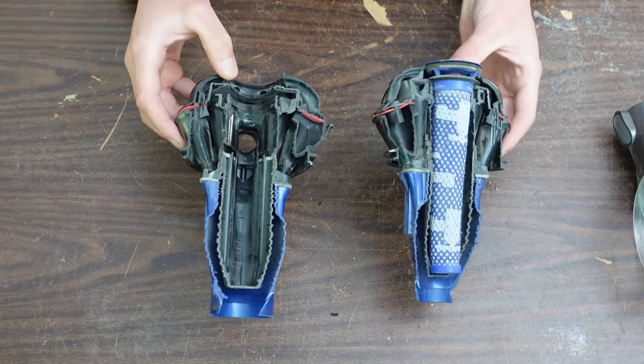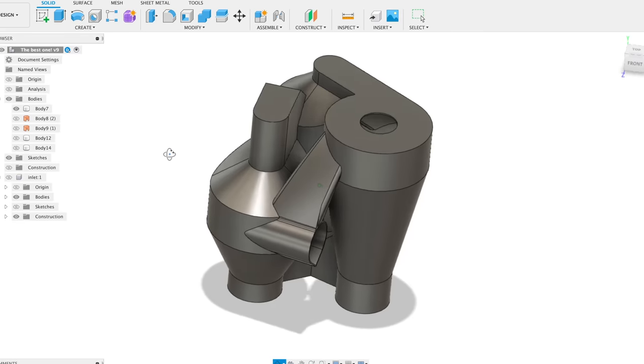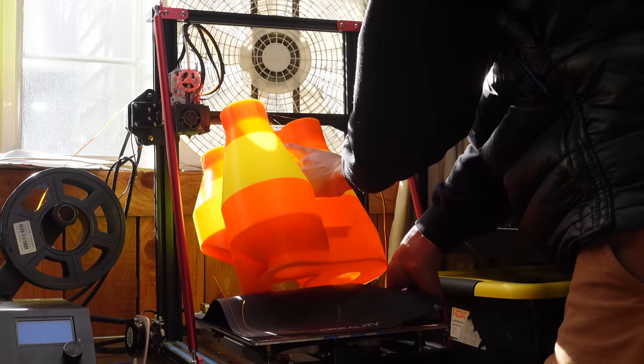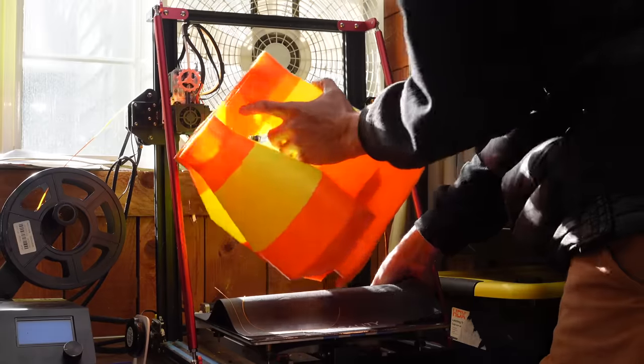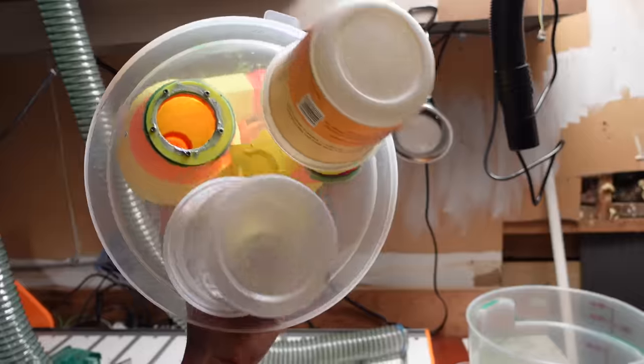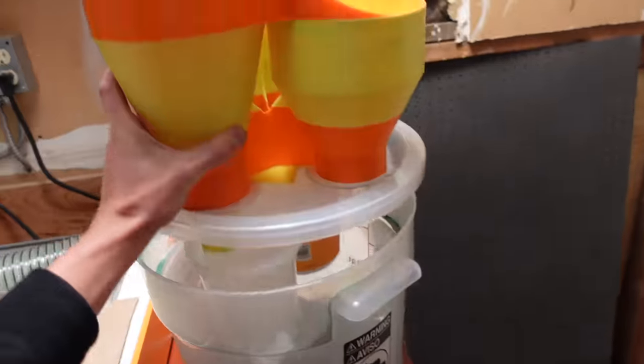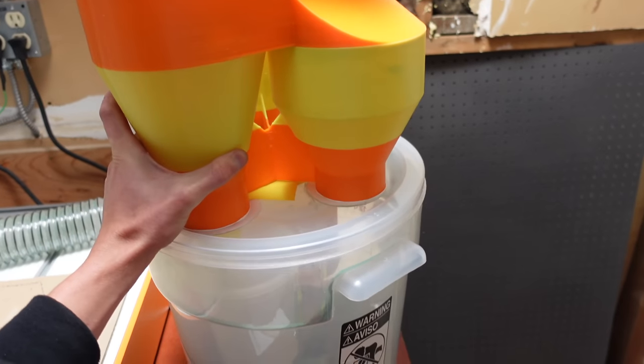So maybe with my next cyclone separator project, I'll do a multi-stage design more like the Dyson's. I already did this in the past with this version here that had discrete dust collection chambers all within the main bucket. But the issue with this one was that all three cyclones were fairly similar in size, so the second two in the series weren't helping all that much.